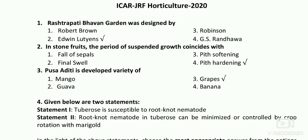Coming to the first question: Rashtrapati Bhavan garden was designed by — the answer is Edwin Lutyens. It is an example of a Mughal garden, formal style, formerly known as Viceregal House. It was designed by British architect Sir Edwin Lutyens, completed in 1929, inaugurated in 1931, and renamed Rashtrapati Bhavan garden in 1950.